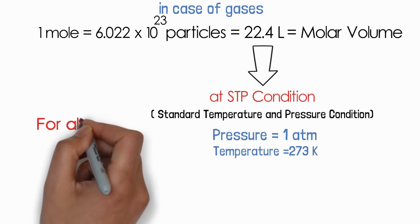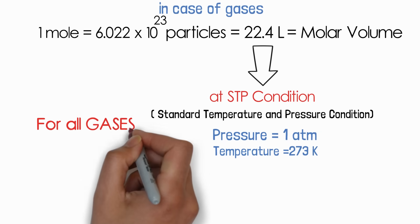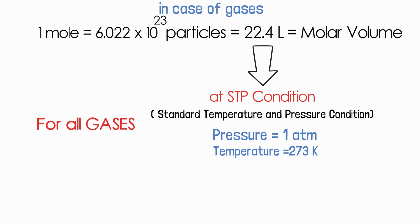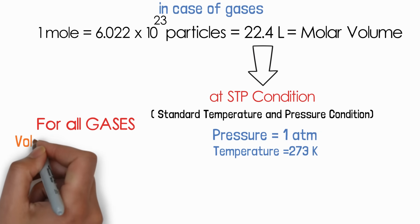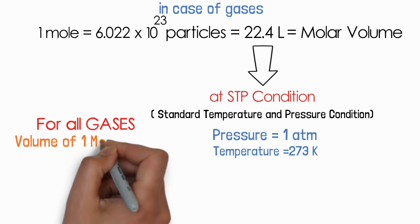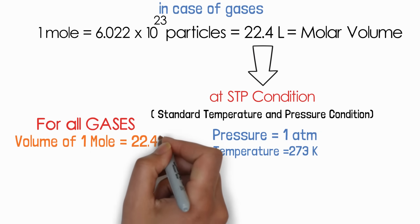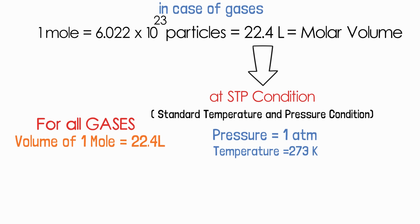No matter which gas we are talking about — carbon dioxide, ammonia, sulphur dioxide, sulphur trioxide — 1 mole is always 22.4 litres at STP conditions.